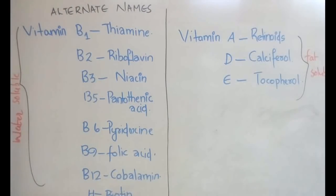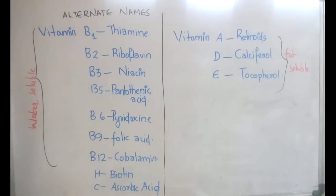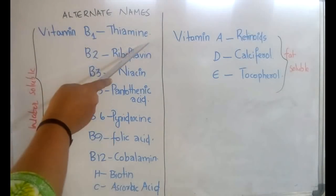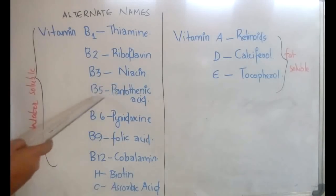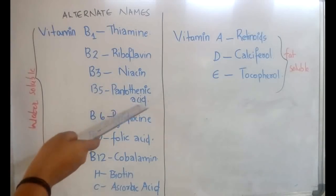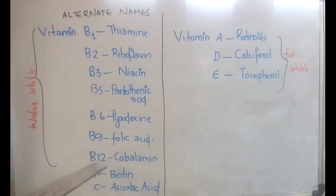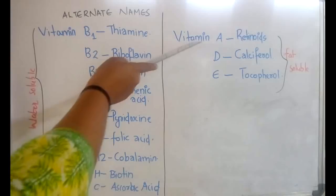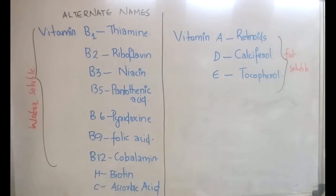Let's begin with the other names of the vitamins. Vitamin B1 is known as thiamine, B2 is riboflavin, B3 is niacin, B5 is pantothenic acid, B6 is pyridoxin, B9 is folic acid, B12 is cobalamin, H is biotin, C is ascorbic acid, vitamin A is retinoids, D is calciferol, and E is tocopherol.